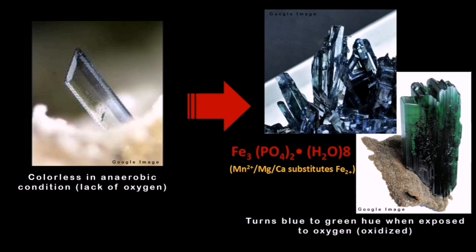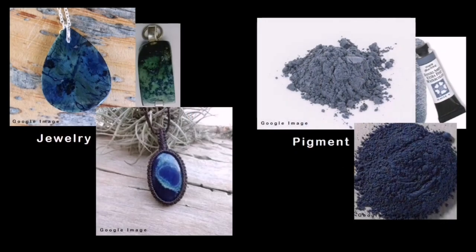You can see in the formulation that Fe2+ can be substituted by manganese, magnesium, or calcium. Vivianite has also been used widely in the jewelry industry — they make pendants, necklaces, and earrings — and in the painting industry for pigments of various hues and to make color paste.